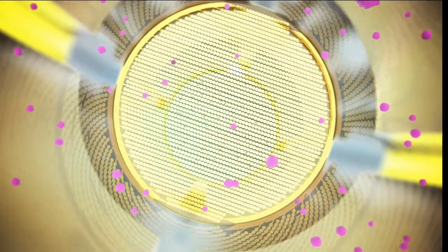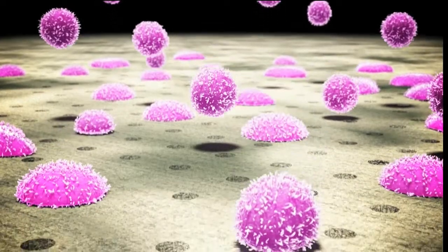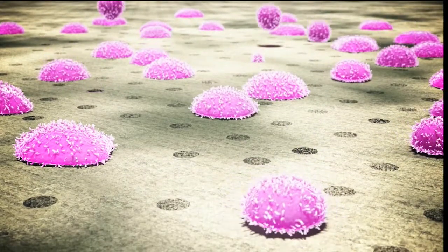As cells make their way through the ECM gel, pass through the porous membrane, and adhere to the gold electrodes, the system measures the level of electrical impedance.